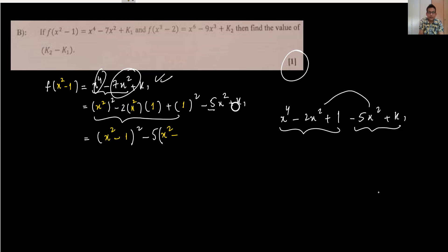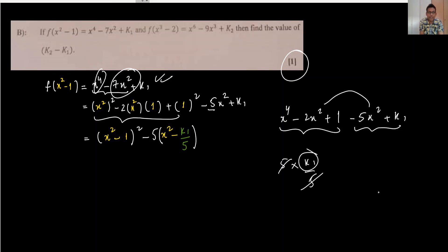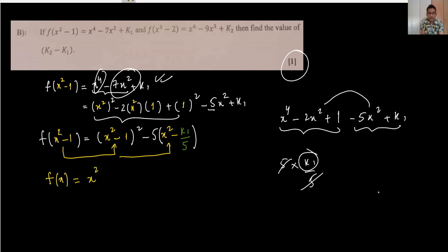When we take -5 as common and write k1/5 inside the bracket, multiplying -5 by k1/5 gives k1. Observing the structure, this matches f(x² - 1) where x plays the role of the argument. So the original function is f(x) = x² - 5x.